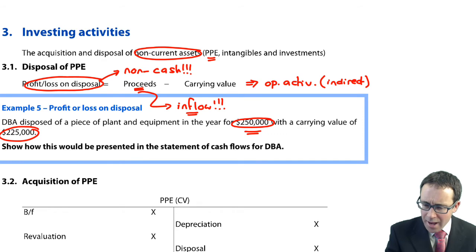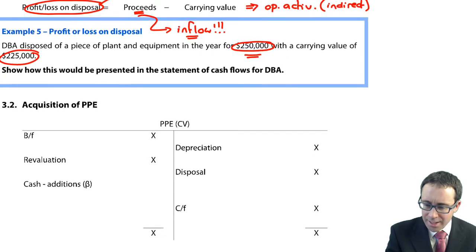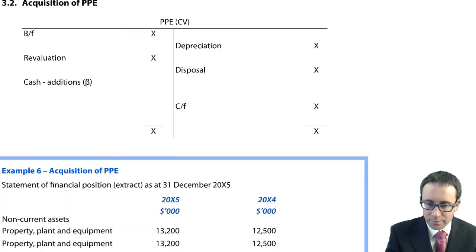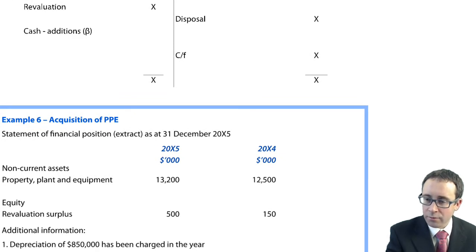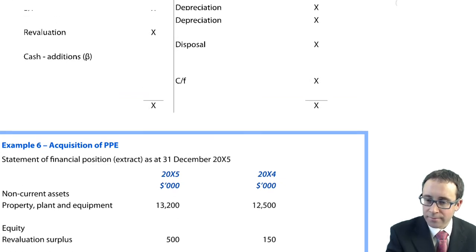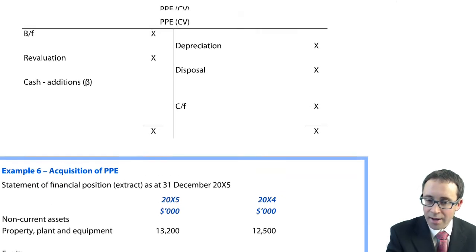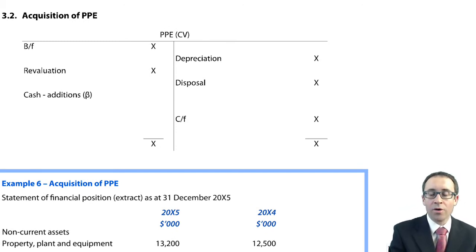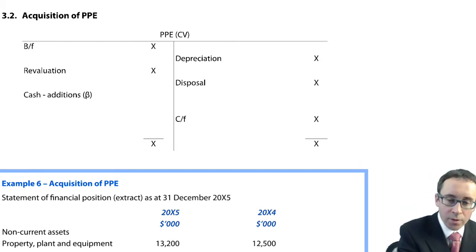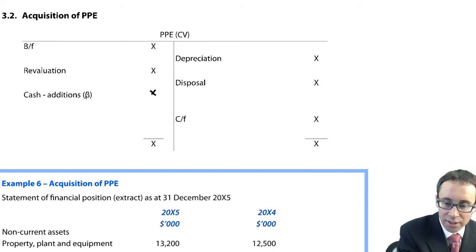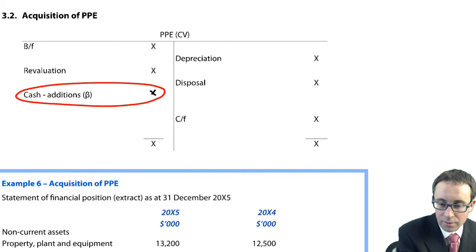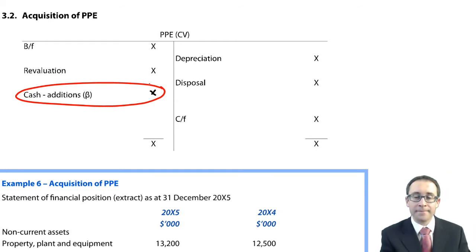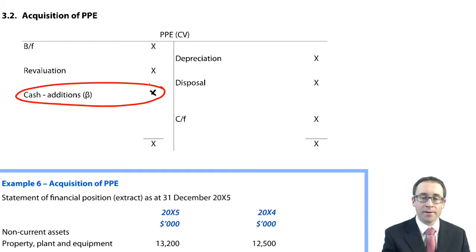We've got the acquisition of property, plant and equipment — so instead of selling it, you have the acquisition of PPE. That is a cash outflow. You are looking for your cash additions, whereby you've credited bank and debited your PPE.